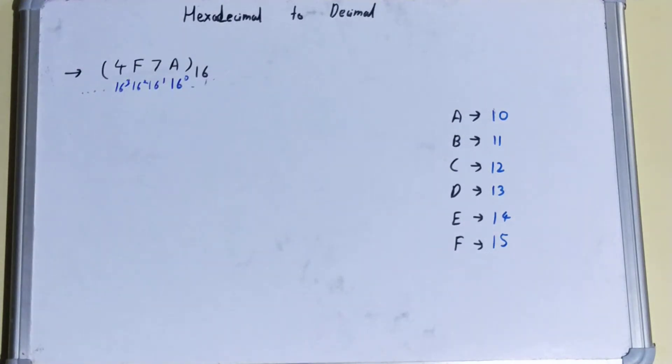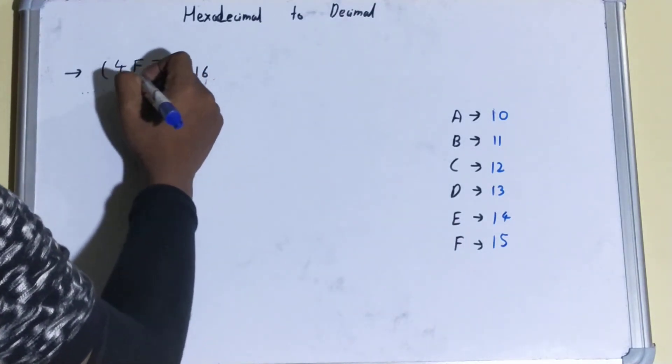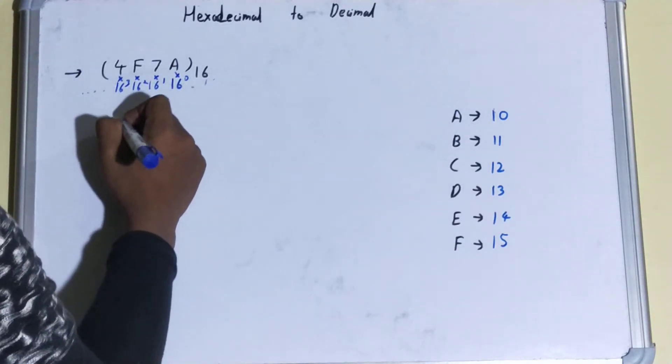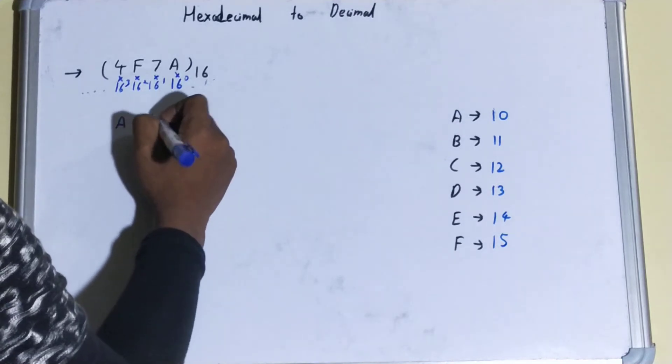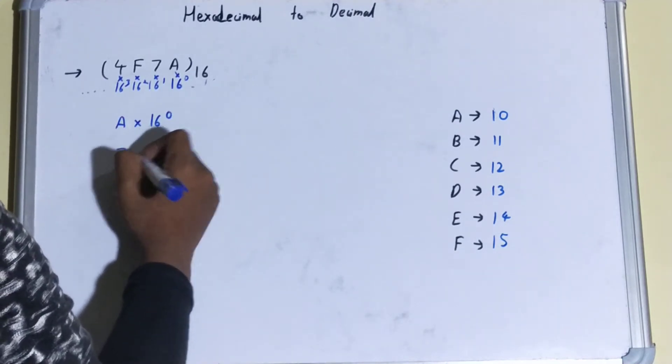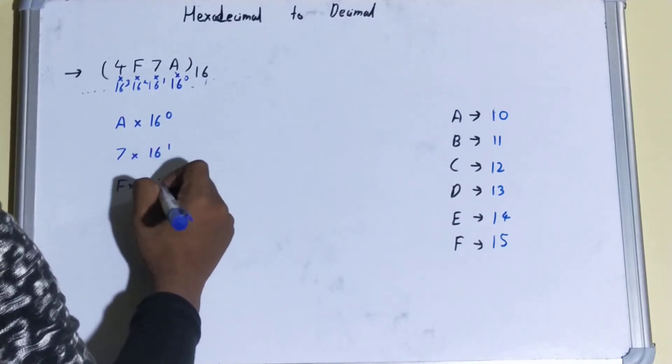Now what we'll be doing is we'll be multiplying the number with the multiples of 16. This is a bit different from that binary one. So what we'll be doing is A into 16 raised to power 0, then 7 into 16 raised to power 1, then F into 16 raised to power 2, and 4 into 16 raised to power 3.